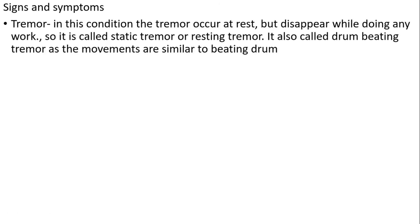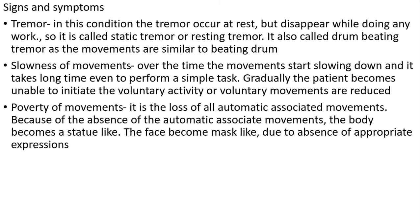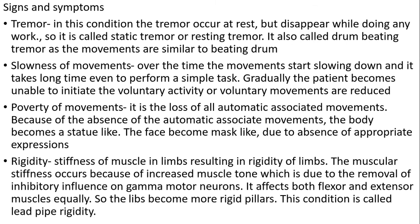Signs and symptoms: tremors occur at rest but disappear while doing any work, so it is called static or resting tremor. Slowness of movements — all movements start slowing down and it takes a long time to perform even a simple task; the patient becomes unable to initiate voluntary activity. Poverty of movements — there is a loss of all automatic associated movements, causing the body to become statue-like and the face to become mask-like. Rigidity — stiffness of the muscles in the limbs results in rigidity. Muscular stiffness occurs due to increased muscle tone from removal of inhibitory influence on gamma motor neurons. It affects both flexor and extensor muscles equally, and the limbs become more rigid, a condition called lead pipe rigidity.